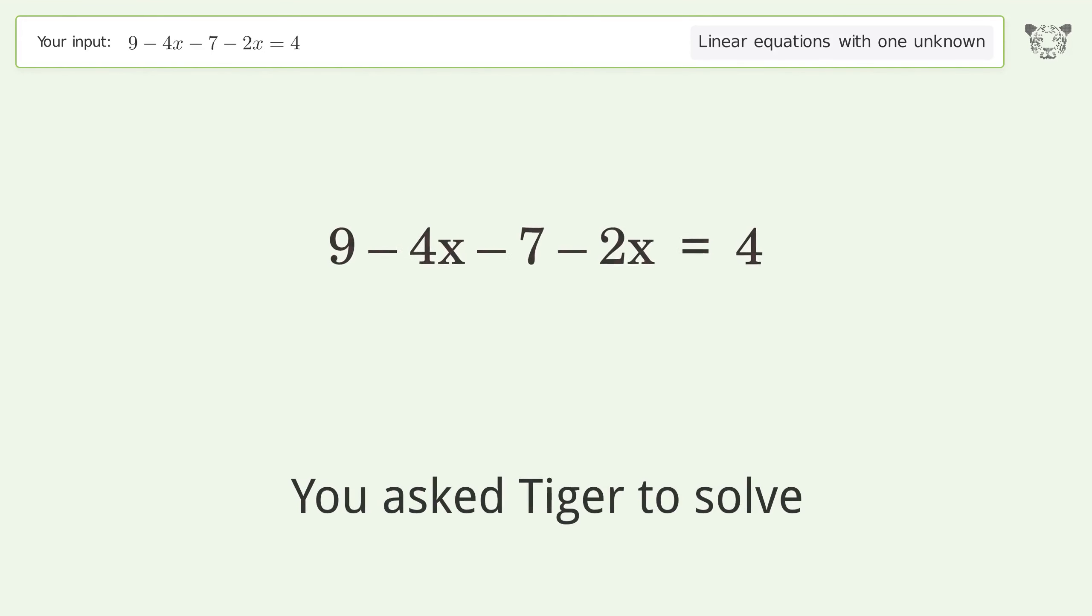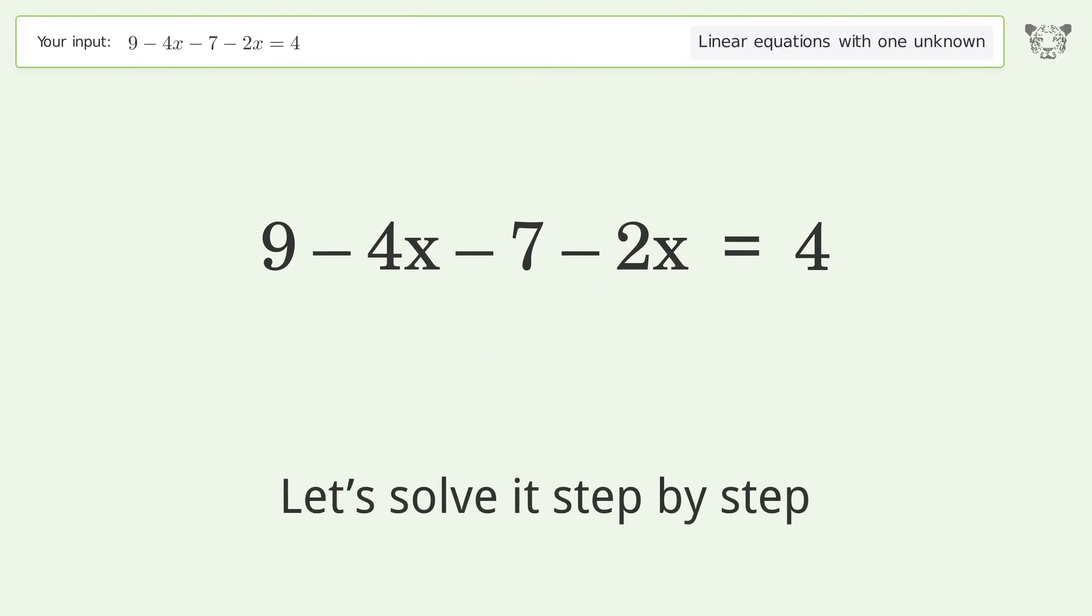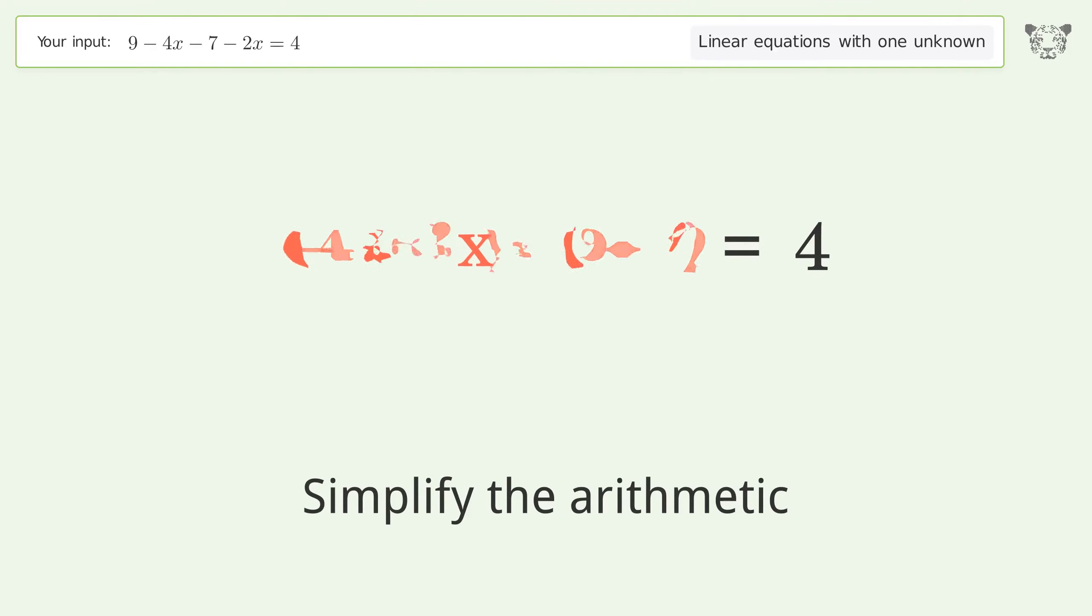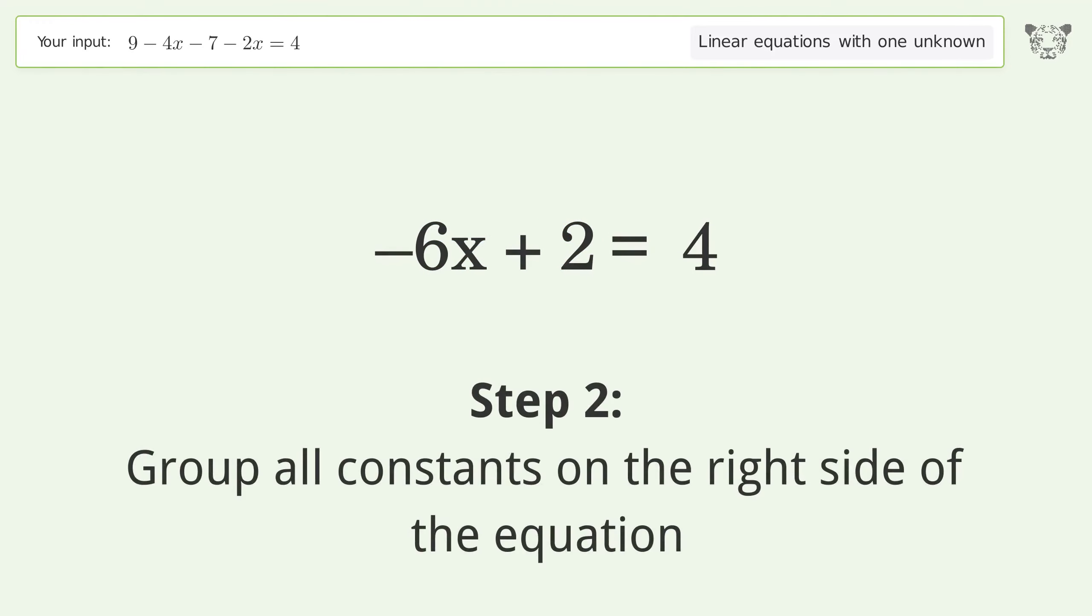You ask Tiger to solve this. This deals with linear equations with one unknown. The final result is x equals negative one over three. Let's solve it step by step. Simplify the expression, group like terms, simplify the arithmetic, group all constants on the right side of the equation.